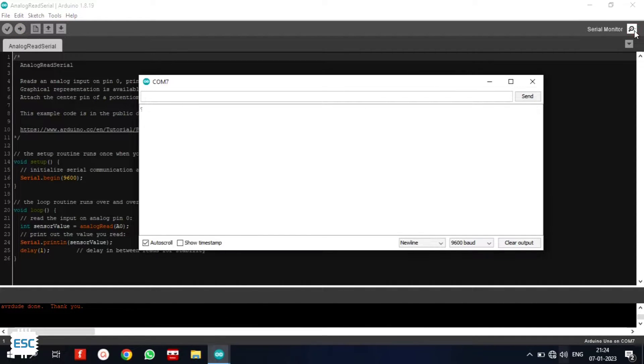Now select the board and port and upload the code. After uploading the code, open the serial monitor and you can see the serial data.